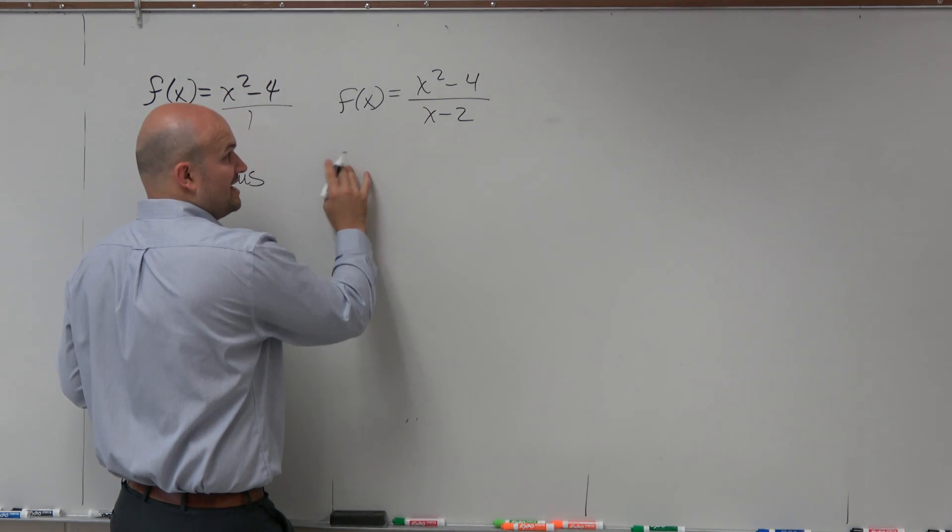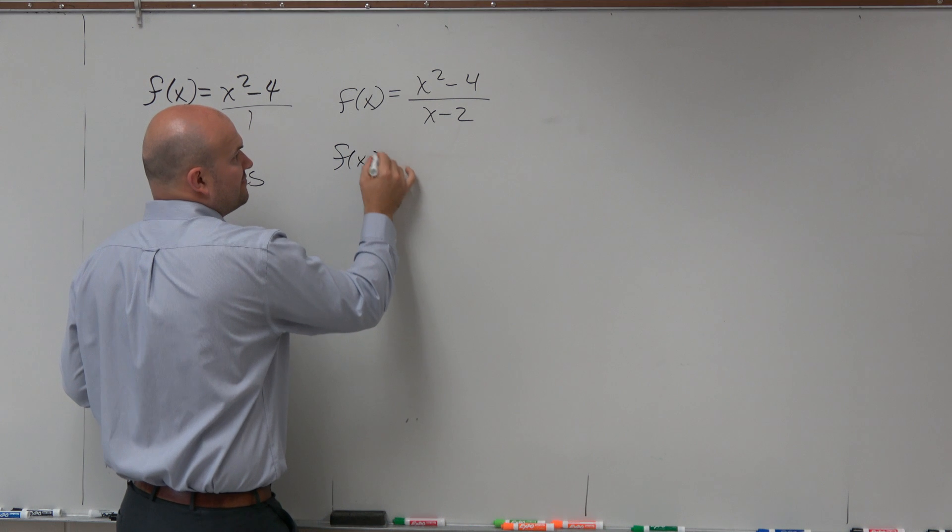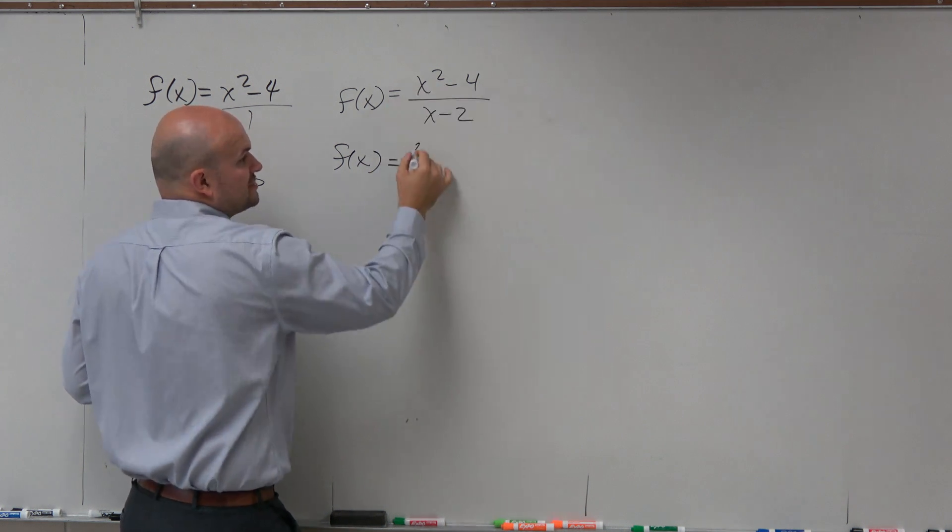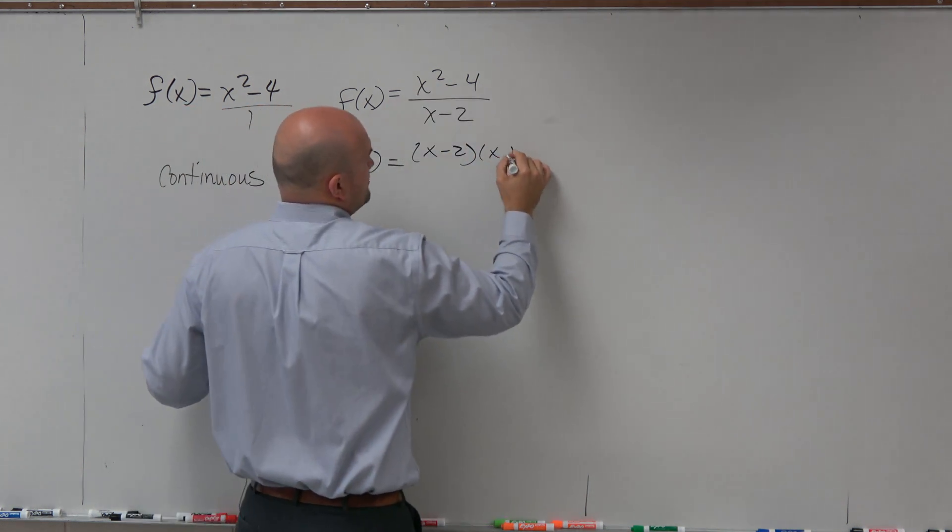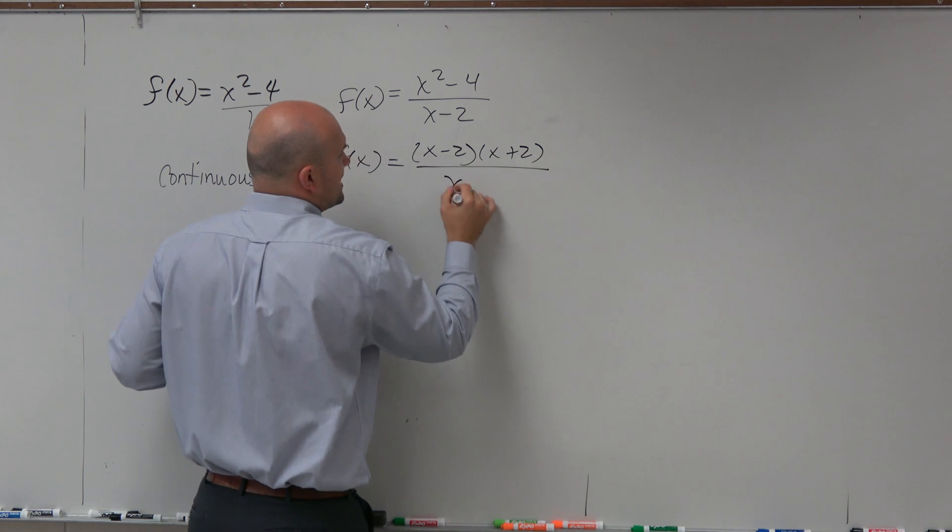All we simply need to do is try to simplify our function by factoring. So this is a difference of two squares: x minus 2 times x plus 2, all over x minus 2.